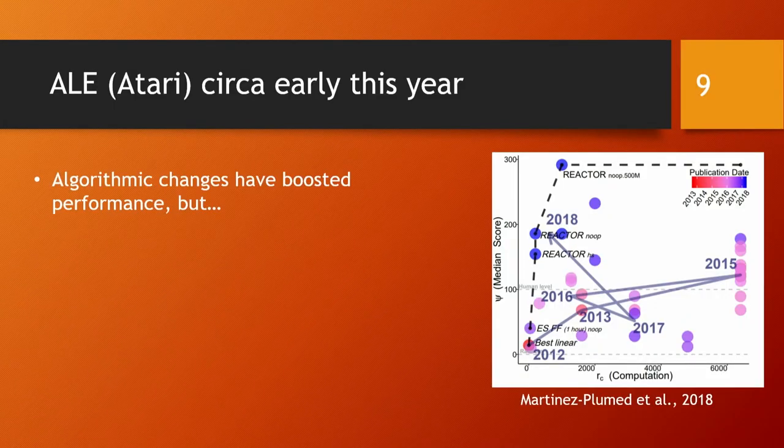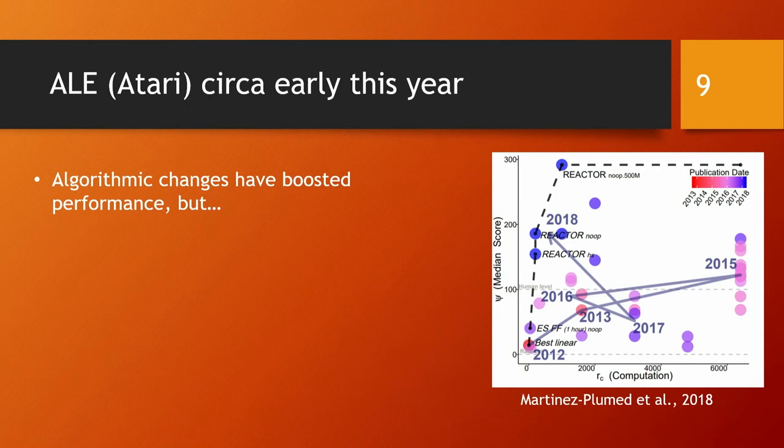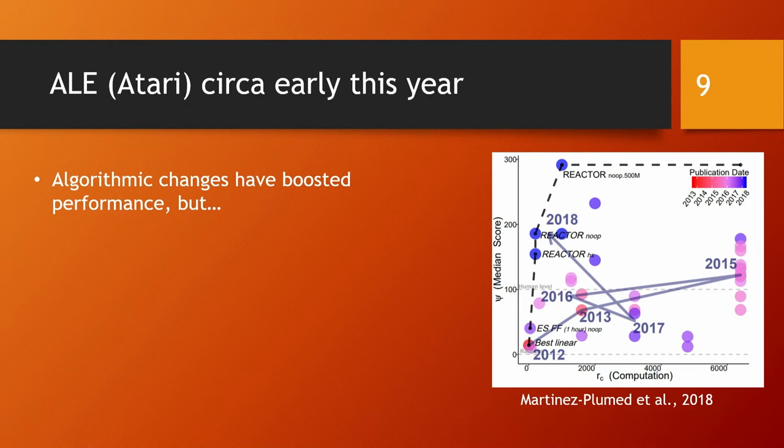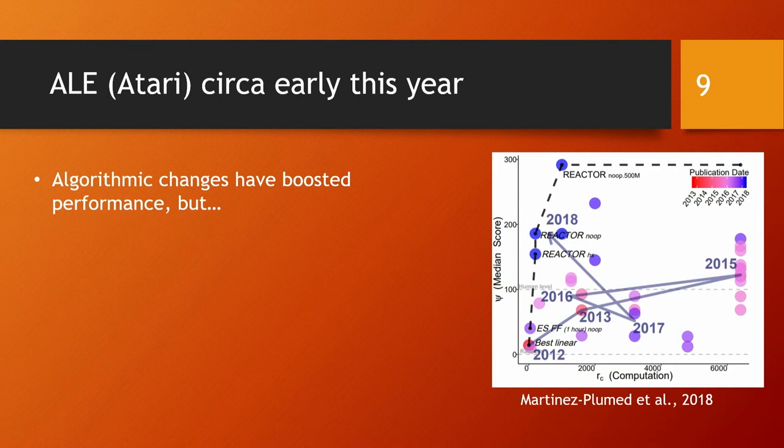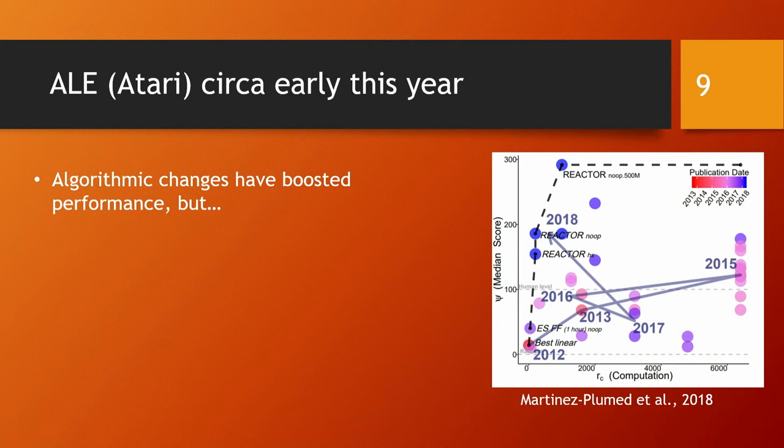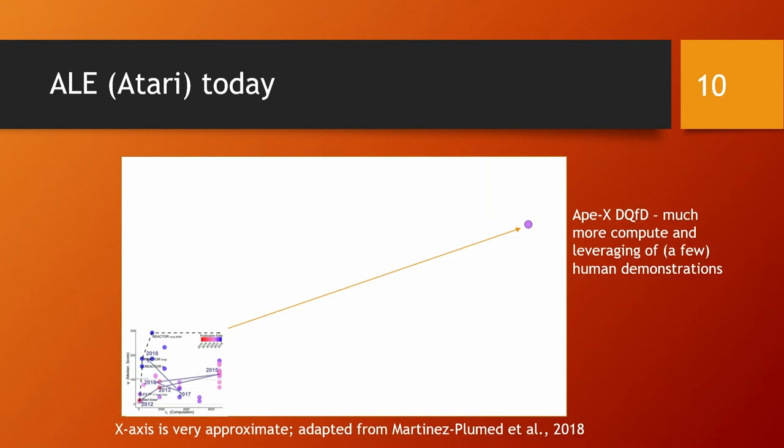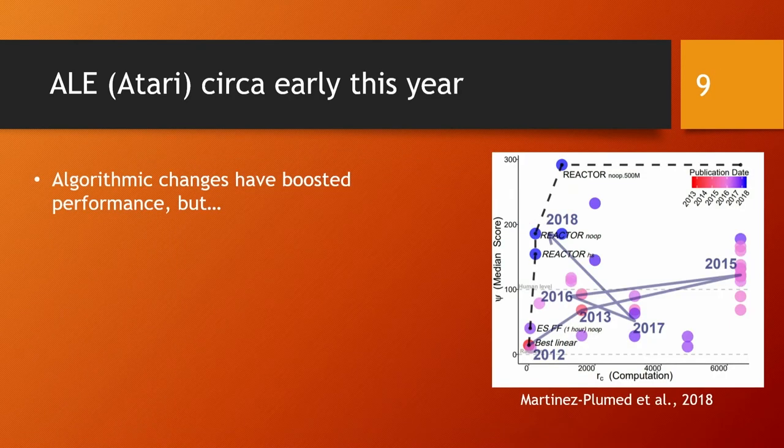But there's another side to the story, which is that the headline results, the equivalent of AlphaGo Zero or AlphaZero, have been achieved at much larger cost. These are a bunch of different plots from a recent paper I was involved in called Accounting for the Neglected Dimensions of AI Progress. This is compute versus score. You can see that you can get an okay score with a very small amount of compute. But to get really high scores, you need to increase the amount of compute. This was a graph that was made just a few months ago. But since then, there's been a big improvement. This is the scale, 300% median performance.